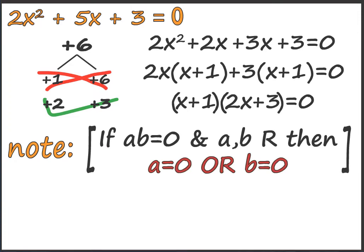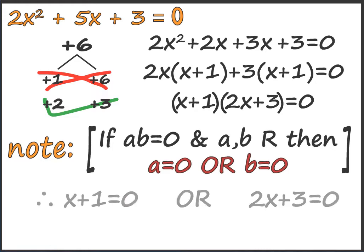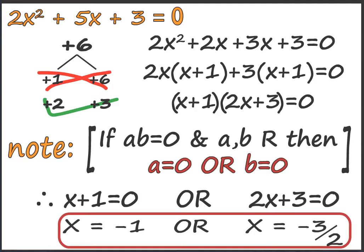Note: if ab equals 0, then either a equals 0 or b equals 0. Therefore x plus 1 equals 0 or 2x plus 3 equals 0, giving x equals negative 1 or x equals negative 3 by 2.